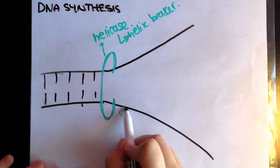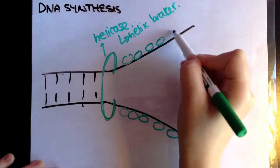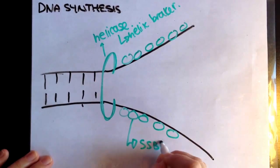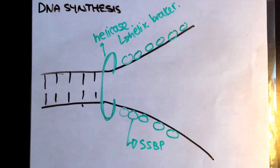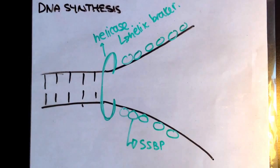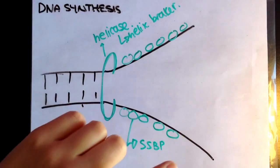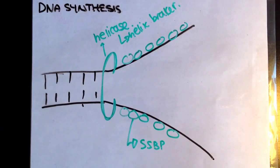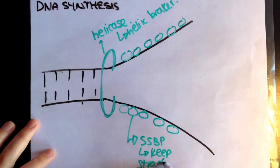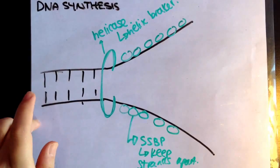Then what happens is we have these little structures on the individual strands that have been opened up — these are called single-stranded binding proteins, or SSBP for short. Single-stranded binding proteins protect the DNA from cleavage, prevent it from rehealing, and protect it from degradation — basically stabilizing the opened-up helix. While the helicase is opening up the helix, the single-stranded binding proteins are keeping the strands apart.